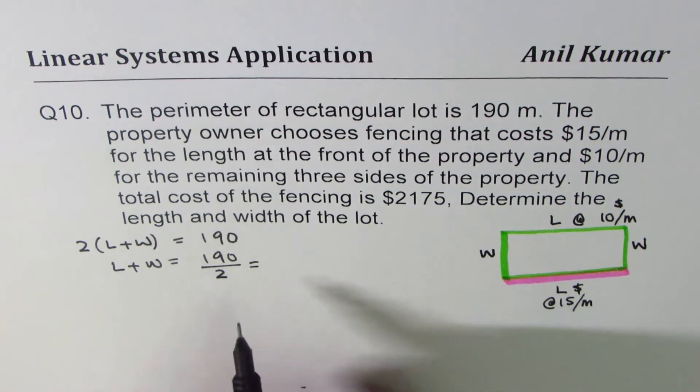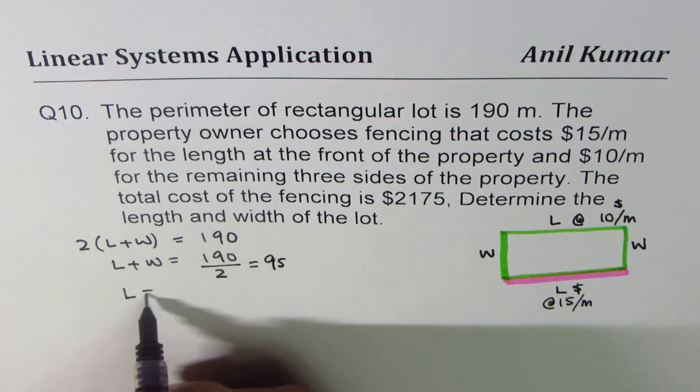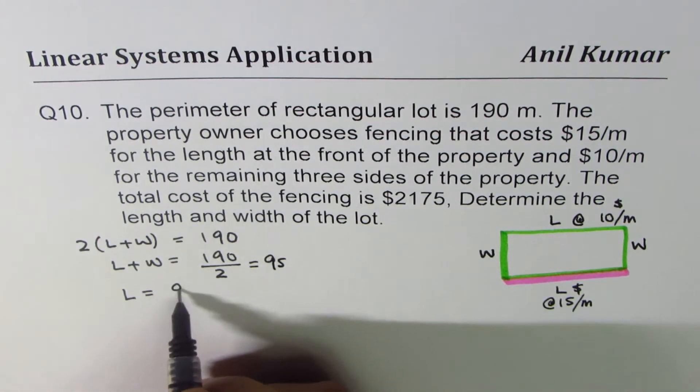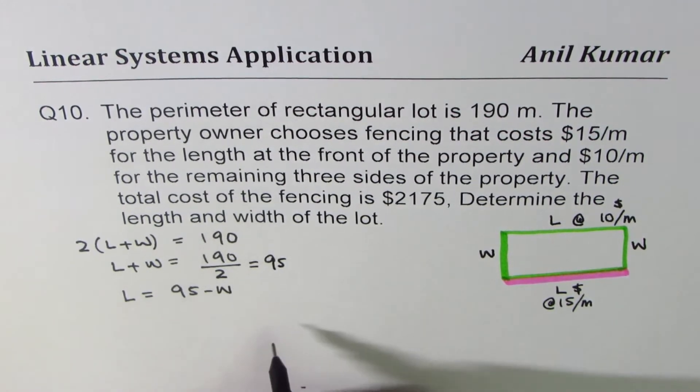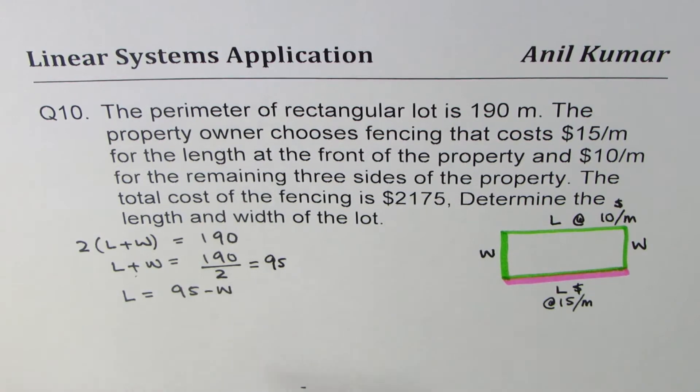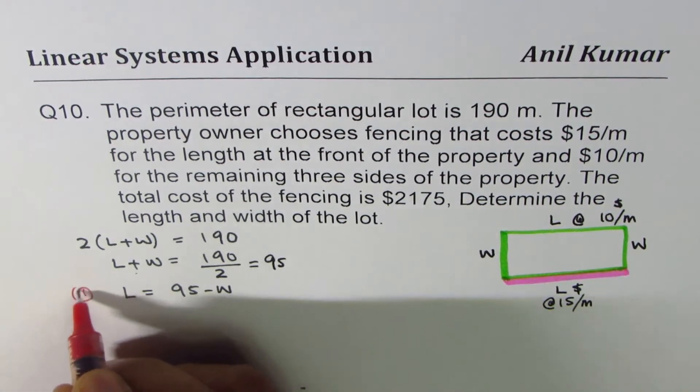So you can divide this, 95. So you can write length as 95 minus W. You can write length in terms of width. You could write width in terms of length also. So that becomes one of our equations. We'll call this equation 1.